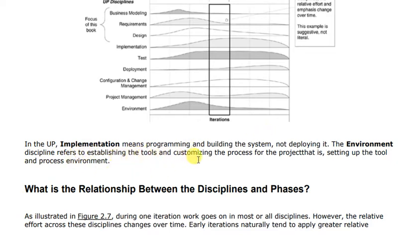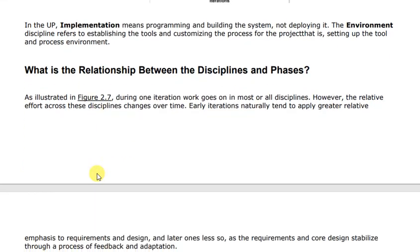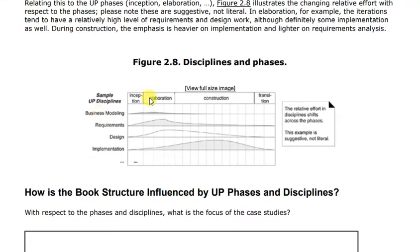The Environment discipline refers to establishing the tools and customizing the process for the project — that is, setting up the tools and the process environment for development.